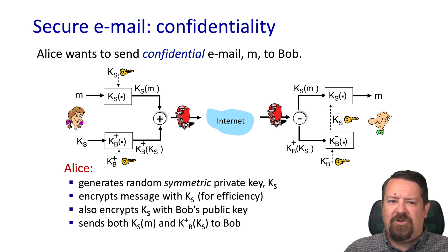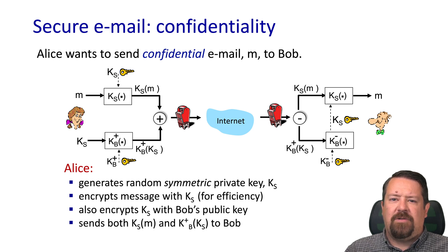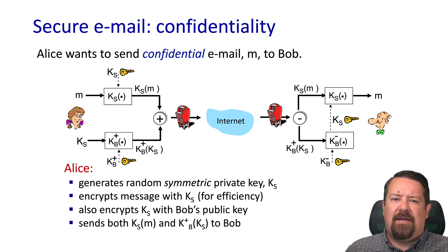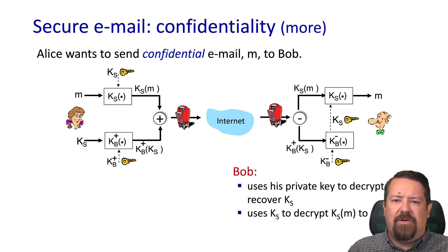Alice has her plain text message M. Encrypting large amounts of data with a public key encryption algorithm is not very efficient, so she's going to use a symmetric key algorithm to encrypt her message and protect it from being read. But that means she has to get the shared key over to Bob somehow. To do that, she's going to encrypt the symmetric key with Bob's public key. This way she can send both the message K_S of M and the shared key in its encrypted form over to Bob together. On the receiving side, Bob can use his private key to decrypt the shared key and then use the shared key to decrypt the message.